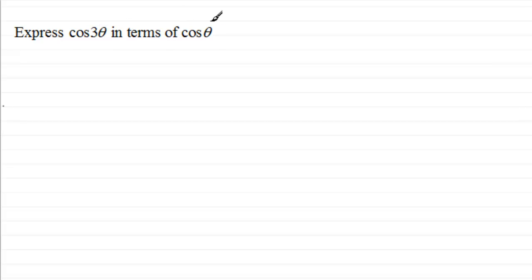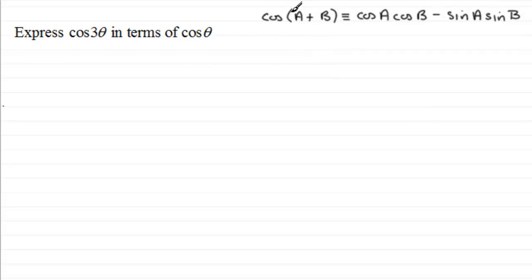In this video I want to show you how we can express cos(3θ) in terms of cos(θ). The method I'm going to use is the addition formula: cos(A + B) is identical to cosA·cosB − sinA·sinB. This is an addition formula you should be familiar with.